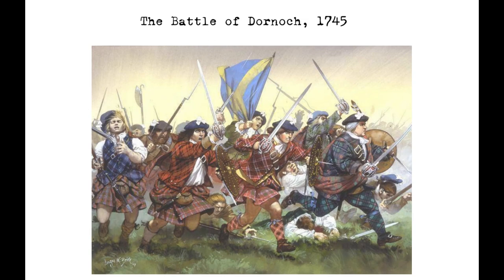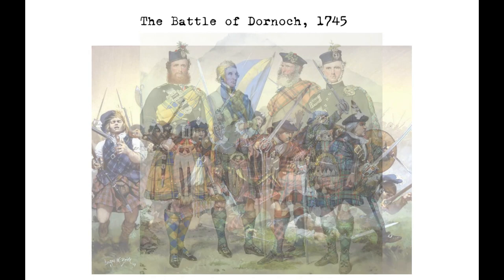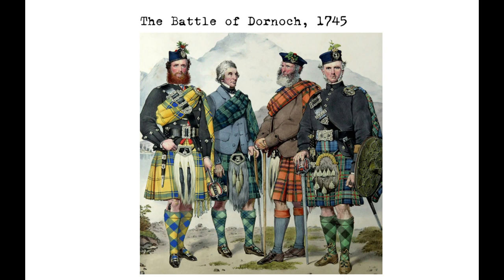The background to the Battle of Dornock was the ongoing conflict between the Jacobites, who were supporters of the exiled Stuart dynasty, and the British Hanoverian government. Lord Loudon, a supporter of the government, was at Dornock when the Jacobites began their advance. Despite warning signs, Lord Loudon concluded that the Jacobites would attack from the west, across the River Shin, and that his eastern flank was secured by the Royal Navy.